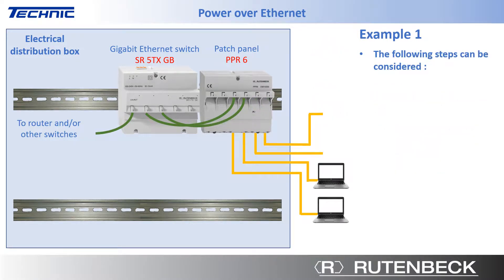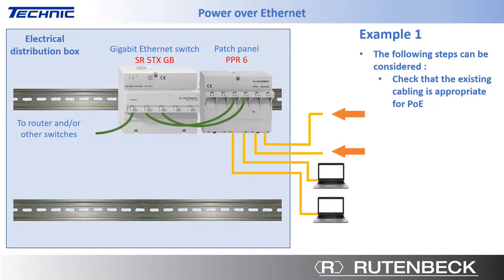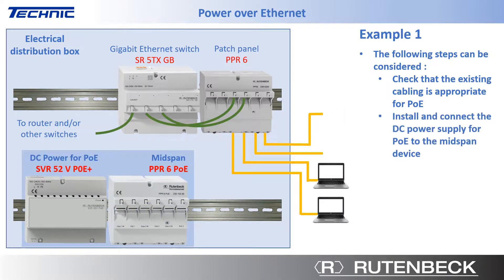The following steps can be distinguished. Check that the existing cabling is appropriate for power over Ethernet or power over Ethernet plus. The simplest way is to consult the manufacturer's specifications. Install and connect the DC power supply for power over Ethernet or power over Ethernet plus to the mid-span device.